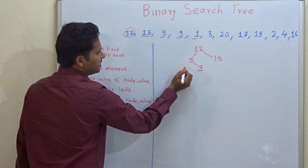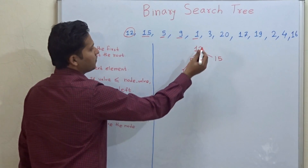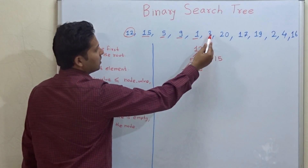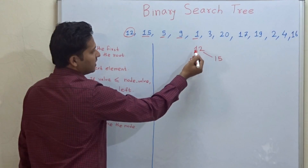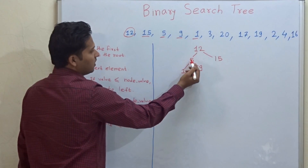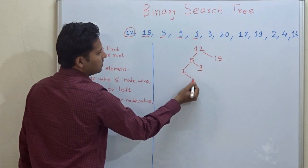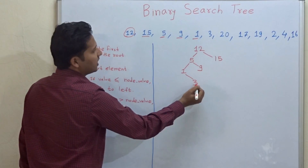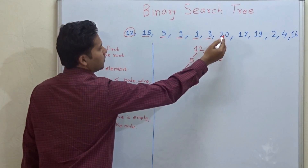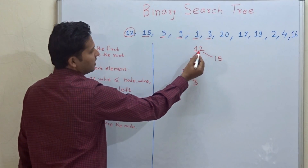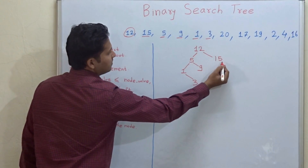Then 1: 1 is less than 12 and less than 5, so it comes to the left side of 5. Then 3: 3 is less than 12, less than 5, but greater than 1, so it comes to the right side of 1. Then 20: 20 is greater than 12 and greater than 15, so it comes to the right side of 15.